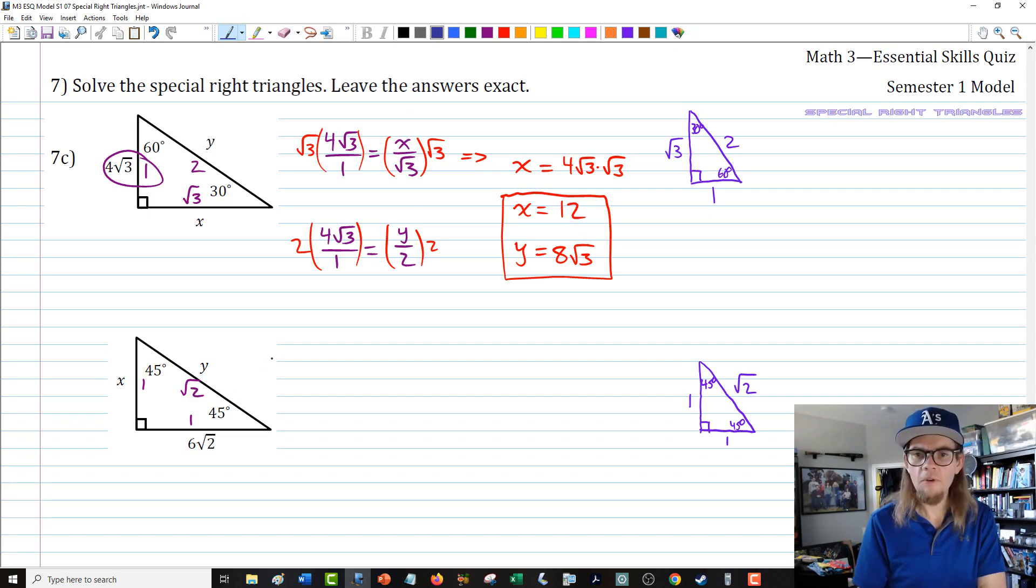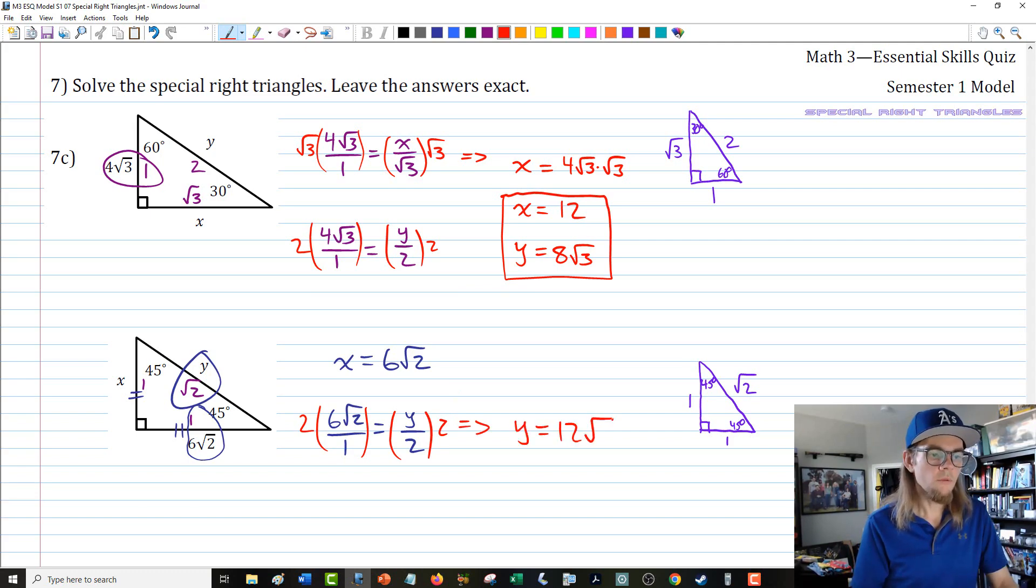In our second one down here, our 45-45-90 right triangle, before I set it up, I want to point something out. Automatically, we can just state that x equals 6 root 2. The reason is these two sides are congruent, because this is isosceles. We've got one other side to deal with. Going outside over inside, 6 root 2 over 1 equals y over 2. We know we just got to solve for y, so I'm going to multiply both sides by 2. I'm going to put y equals 12 root 2. And as we said before, we already knew x was 6 root 2.